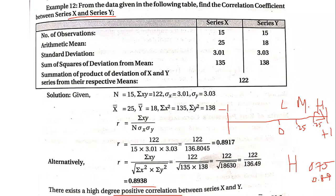These are the three types of problems which we solved under correlation coefficient — by using actual mean, by using assumed mean, and directly using the data. This is Karl Pearson's correlation coefficient.